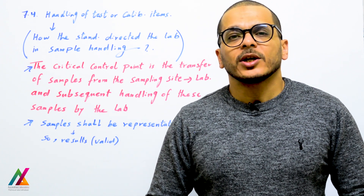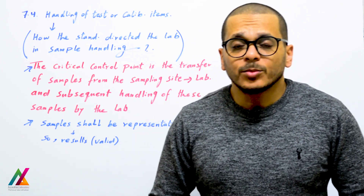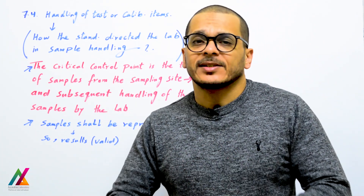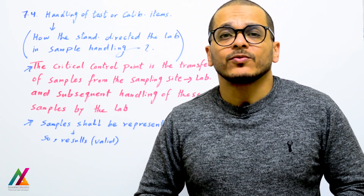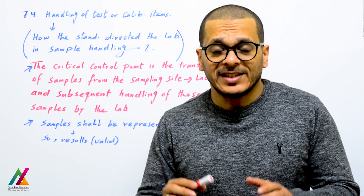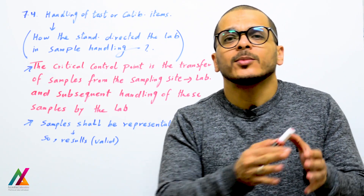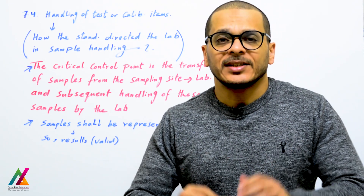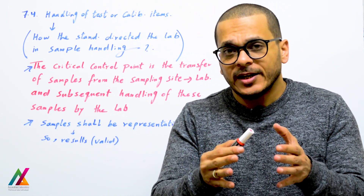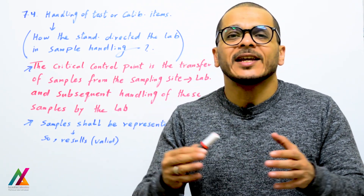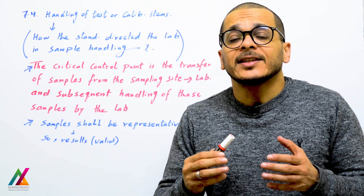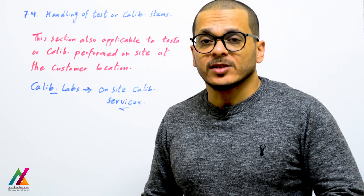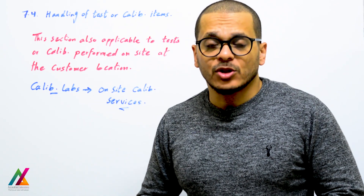Welcome back with a new lecture on ISO IEC 17025:2017. Under process requirements, we have handling of tests or calibration items — how this standard directs the lab in sample handling. The standard focuses on consistent generation of valid results, and the critical control point is the transfer of samples from the site to the lab. This section is also applicable to on-site testing and on-site calibration services.